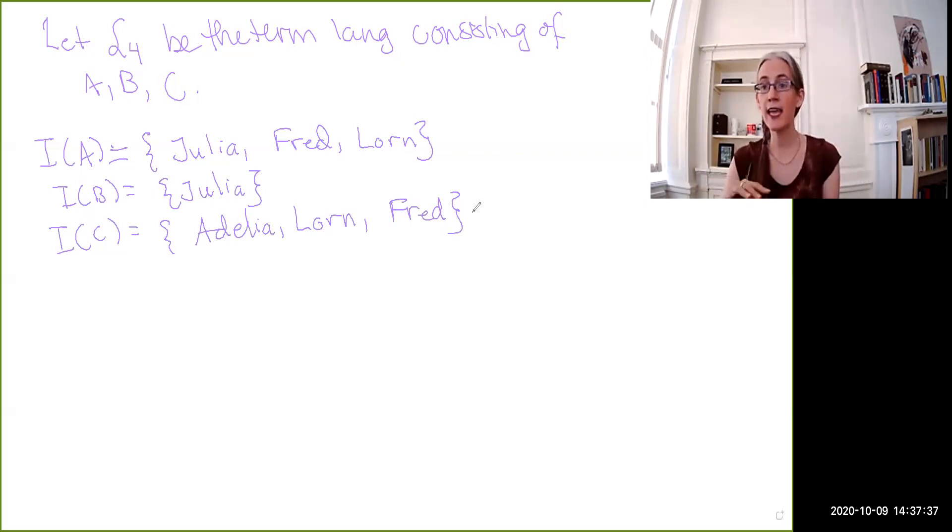Now, you don't have any idea what sort of pre-theoretic interpretation or meaning of A, B, and C I have in mind. You don't know anything about Julia, Fred, Lauren, and Adelia. But wait, you do. Because what you know is that Julia is both A and B. And you know that she is not C. And you know that Lauren is both A and C, but not B. And Adelia is only C. So what you can start seeing are the relationships between the members of the sets.